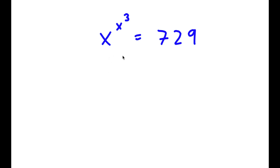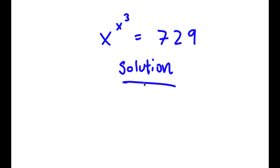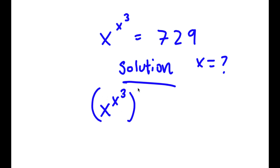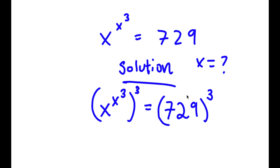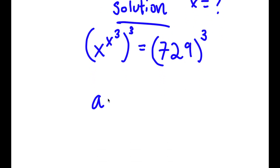In this problem, I have x to the power of x to the power of 3 is equal to 729. To find x, I'm going to start by taking the power of 3 on both sides. So now I have x to the power of x to the power of 3 to the power of 3 is equal to 729 to the power of 3. Using the rule that a to the power of m to the power of n equals a to the power of m times n.